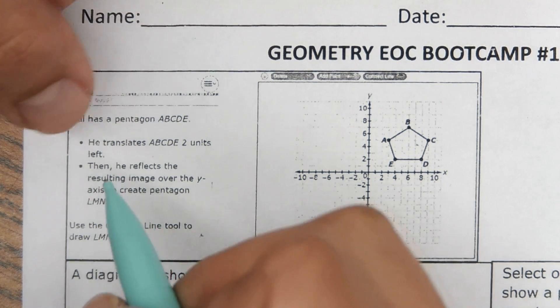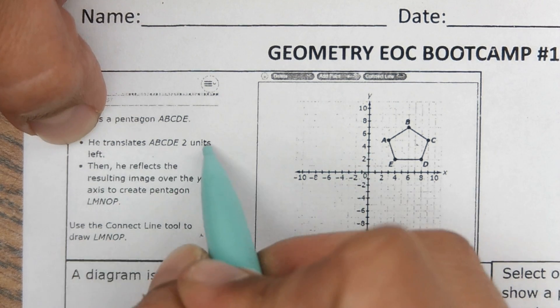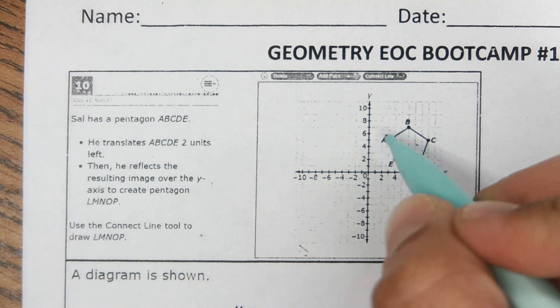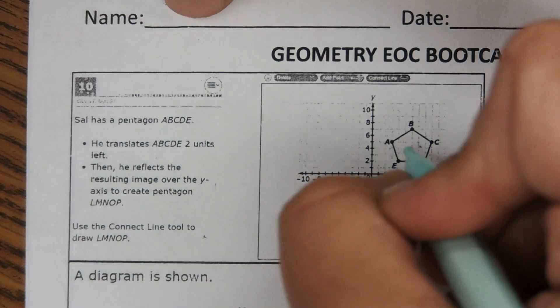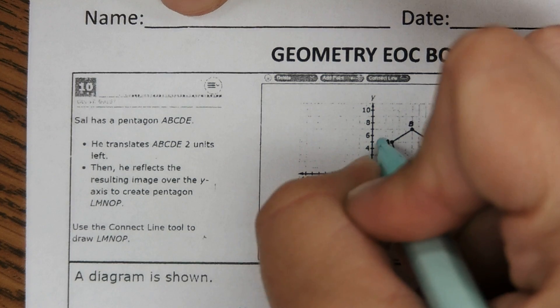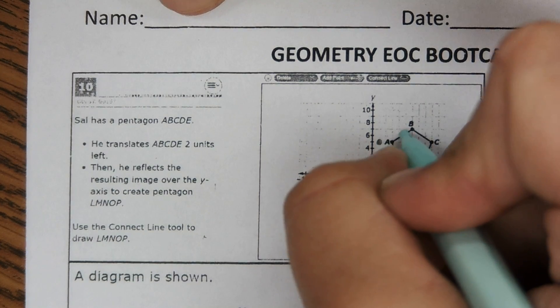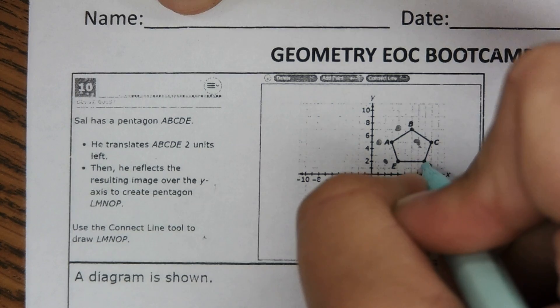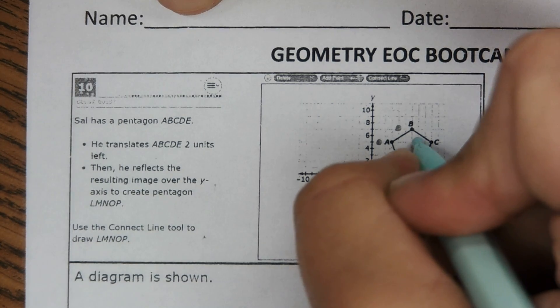Okay, so for this one, the first step says he translates the shape two units to the left. So we are going to take each point and translate it two units to the left. I know it's not a great copy, so kind of eyeball it a little bit, but just take each point and put it two units to the left, like that.